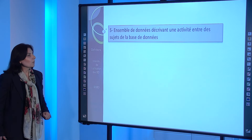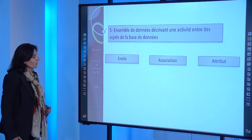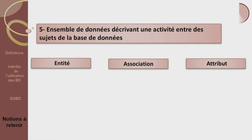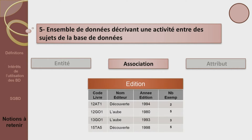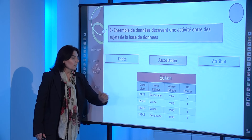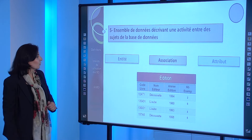Cinquième définition : ensemble de données décrivant une activité entre les sujets de la base de données. Est-ce une entité, une association ou bien un attribut ? Ça ne peut pas être l'entité, qui est l'ensemble de données décrivant un même sujet. Ça ne peut pas être l'attribut, qui est une seule donnée. Ça doit être l'association, comme on a vu dans l'exemple des livres avec l'association édition, qui regroupe le code du livre, le nom de l'éditeur, l'année de son édition et le nombre d'exemplaires.